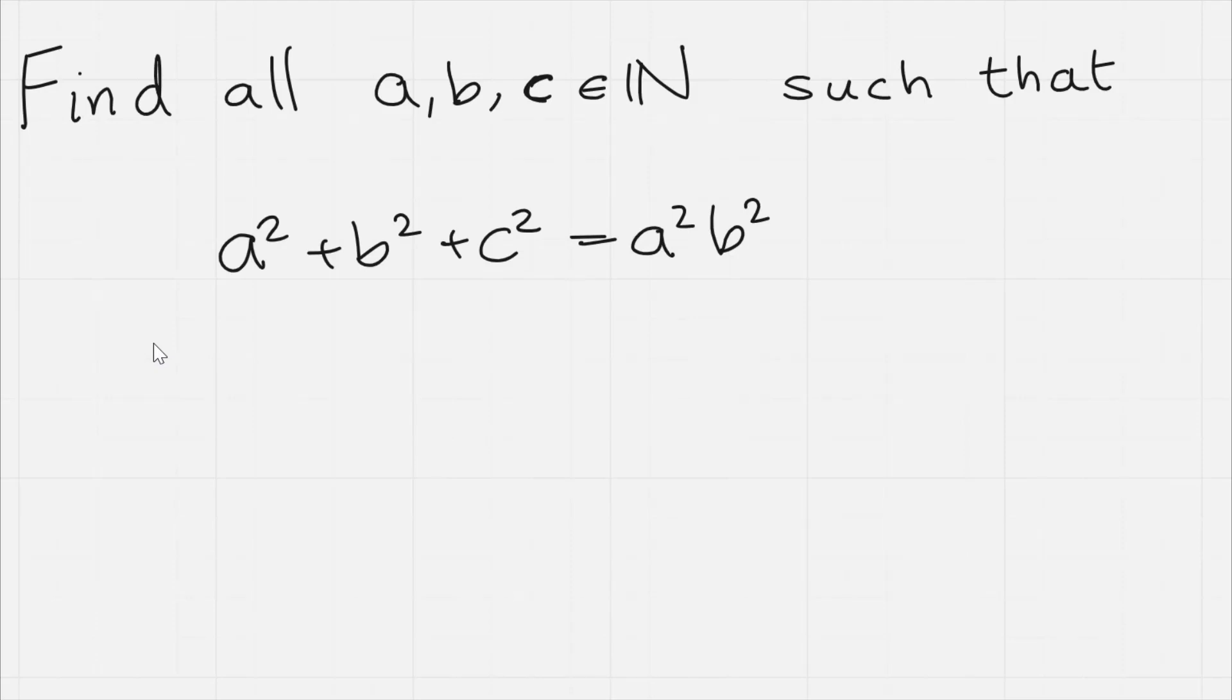Hi, thanks for joining me today. I've got a quick number theory problem. We want to find all positive integers a, b, and c such that a² + b² + c² = a²b².